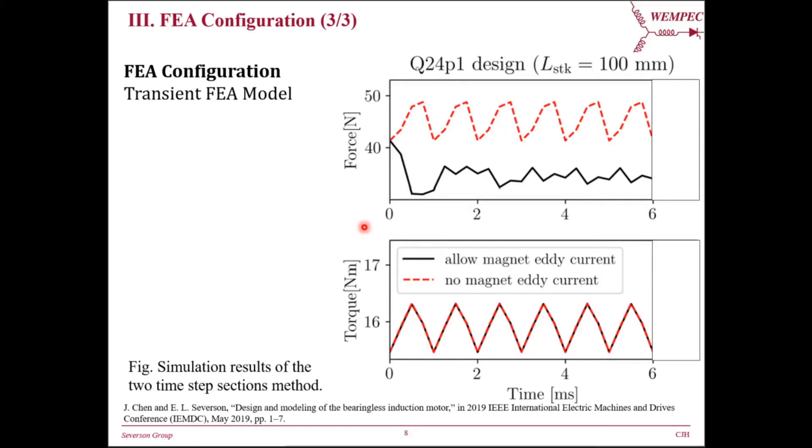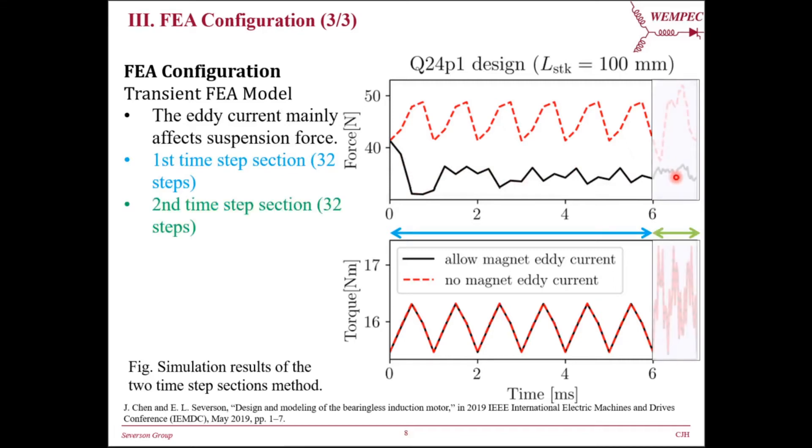During optimization, the transient FEA is actually divided into two sections. During 0 to 6 milliseconds, the time step size is large, and this allows eddy current in magnet to quickly reach steady state. While in the second time step section, as shown in the shaded region here, the time step size is small, and all the motor performance metrics are calculated here.